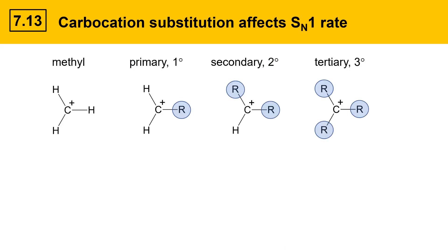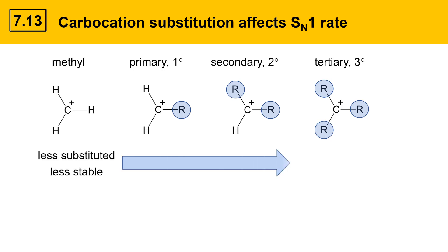The first factor we'll look at is the substitution of the carbocation. There are several different kinds of carbocations, classified by substitution: methyl, primary, secondary, and tertiary carbocations, which differ in the number of R groups attached. Primary has one, secondary has two, and tertiary has three R groups. They vary in stability based on these R groups — the less substituted are less stable, while the more substituted are more stable.